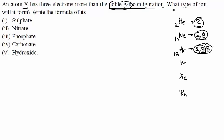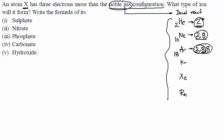These are noble gas configurations. Noble gases are very stable — they usually do not react, and very few compounds of noble gases exist. They are stable because of this stable configuration, and every element wants to achieve this stable configuration by losing or gaining electrons.